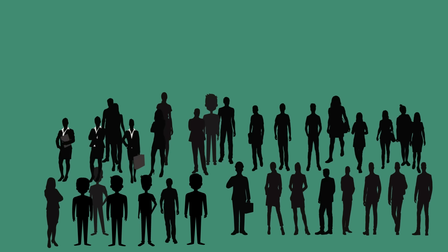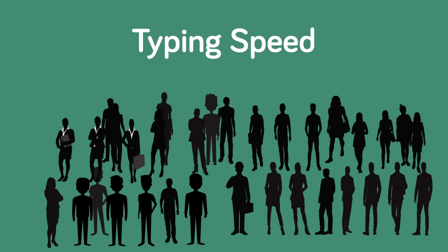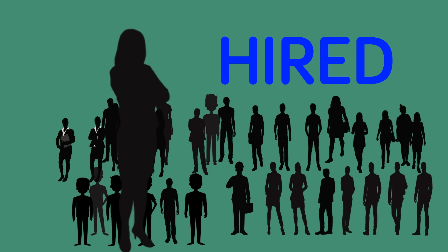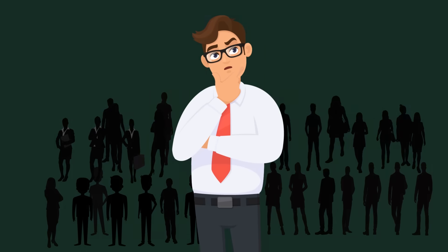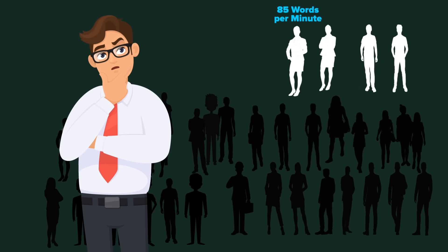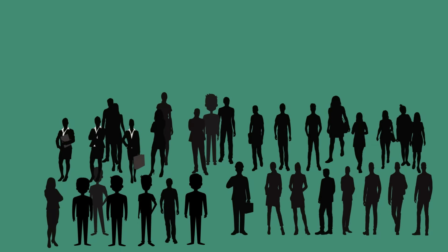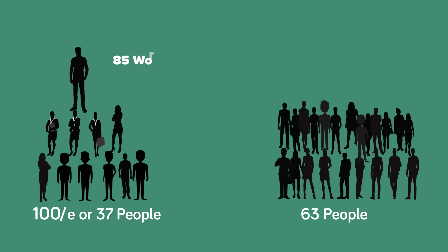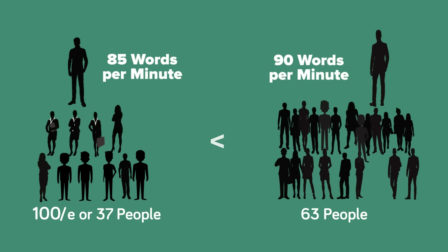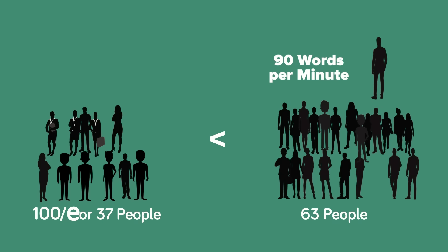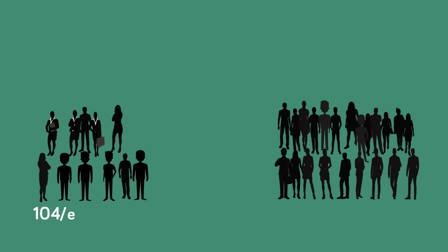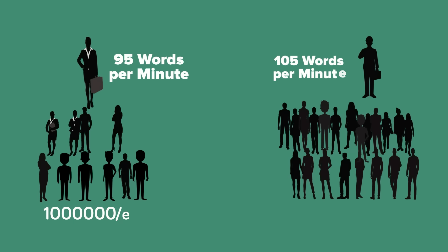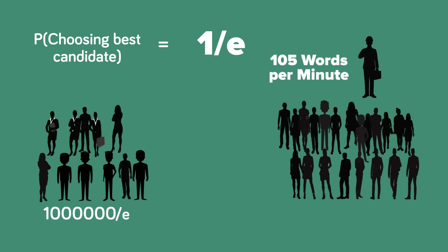Next, let's say you interview 100 people for a secretary job and judge them by something like typing speed. After each interview, you can either hire them or never see them again, and you're only going to pick one person. The math says: first interview 100 over E of them — about 37 people — but do not pick any of those first 37; just keep track of who is the best. Then pick the next person who is better than any of those first 37. Not only does E show up in the number of people you interview before deciding, but if you follow this algorithm you have a 1 over E chance of picking the best one, no matter how many people you have to interview.